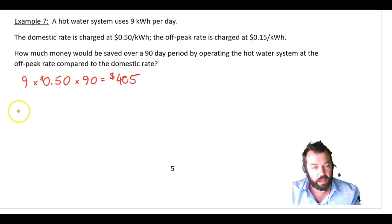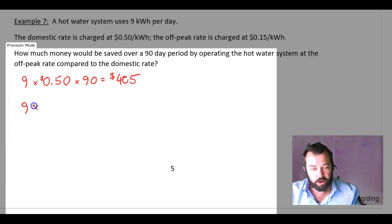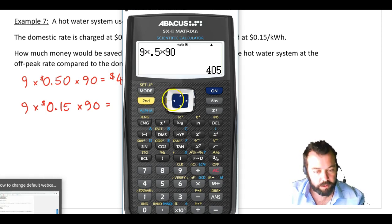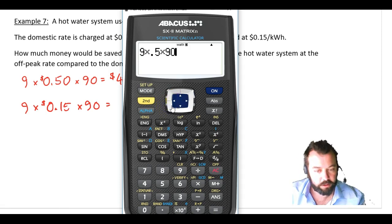Let's try that again at the off-peak rate. So this time it's going to be 9 by 15 cents, 0.15 times 90. Okay, back to the calculator. Now I'm just going to use the arrow button here. You should be familiar with using this thing because it can speed up your work a little bit. So this time only $121.50.